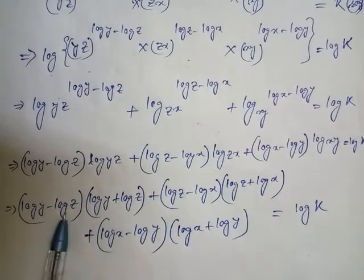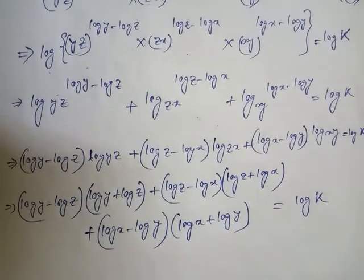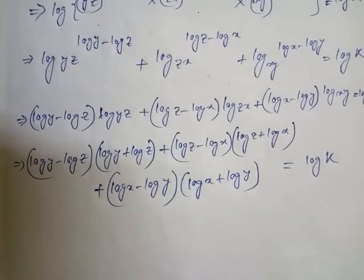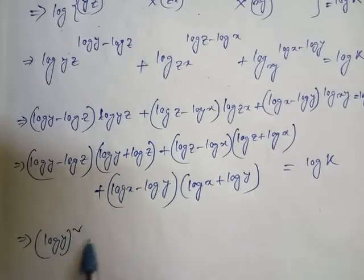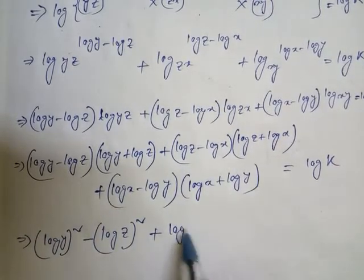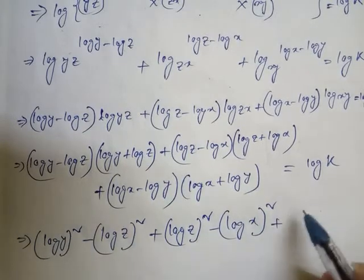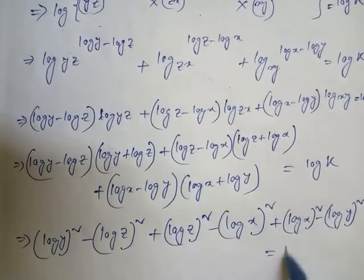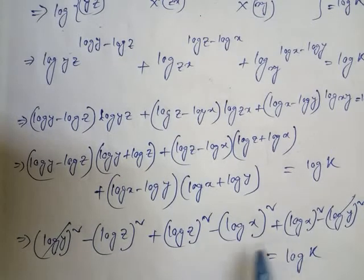Now we can see that each group has the form (a minus b)(a plus b), which equals a squared minus b squared. Applying this identity to each of the three terms: first case gives a squared minus b squared, second case similarly, and third case also. So we get (log y)² minus (log z)², plus (log z)² minus (log x)², plus (log x)² minus (log y)², equals log k.